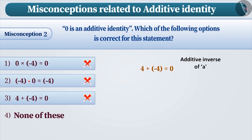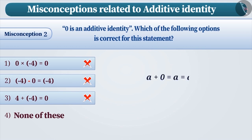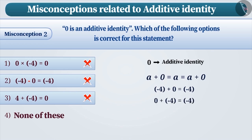The example in option 3 is suitable for the property of additive inverse. This example demonstrates that 4 and minus 4 are additive inverse of each other. The correct understanding is: by adding 0 to any integer, the result obtained is the same integer. Like, minus 4 plus 0 is equal to minus 4, or 0 plus minus 4 is equal to minus 4. Therefore, 0 is an additive identity. With this understanding, option 4 is the correct answer.